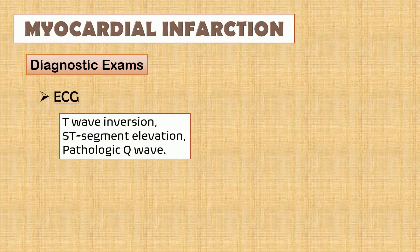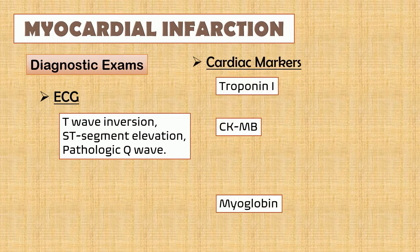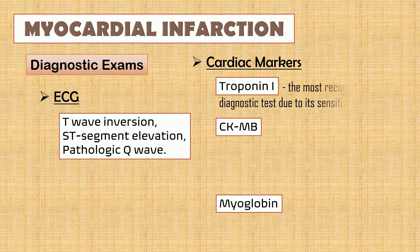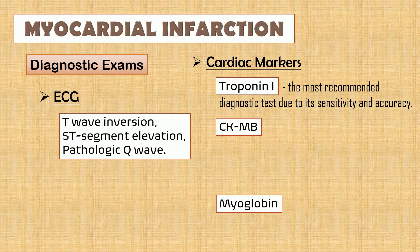ECG: for a patient with MI, the expected ECG result is T-wave inversion, ST-segment elevation, and pathologic Q-wave. Next, cardiac markers like troponin I, CKMB, and myoglobin. Troponin is the most recommended diagnostic test due to its sensitivity and accuracy. Troponin should not be found in the serum of a normal person because it will only be released when myocardial necrosis occurs.